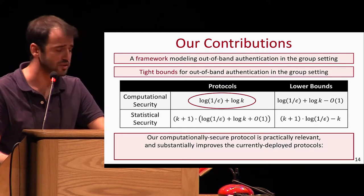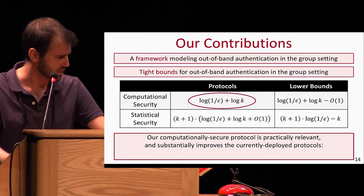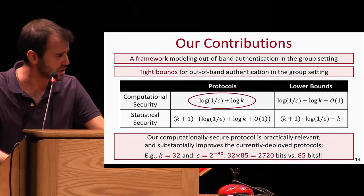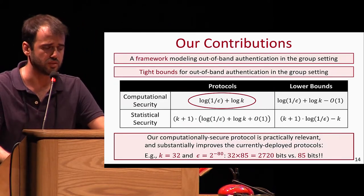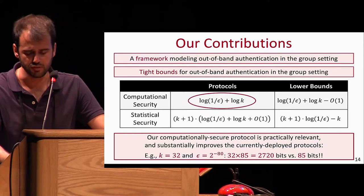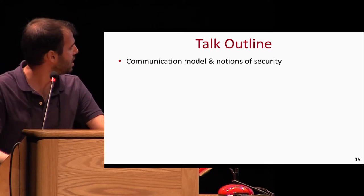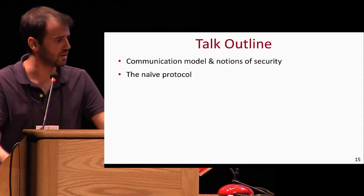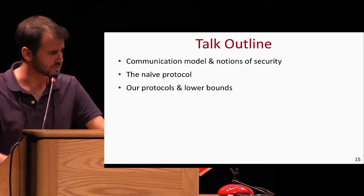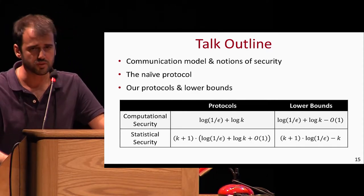Our computationally secure protocol is quite efficient and practically relevant. The talk outline is as follows: I'll give more detail about the communication model and notions of security, introduce the naive protocol currently enabled, then give details about our results. I'll focus on our computationally secure protocol, and as time permits, say a few words about our statistical lower bound.